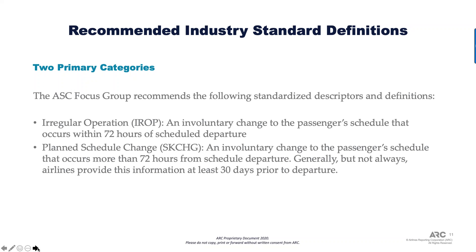The agents on the group were a mix of frontline and back office and operational center staff. The GDS representatives had widespread knowledge of how their GDS was managing in certain situations. The group suggested that the best practice would be to say that an irregular operation is something that occurs within 72 hours of scheduled departure time. Conversely, a planned schedule change is something that occurs more than 47 hours from scheduled departure — generally, airlines are providing information 30 days prior to departure.